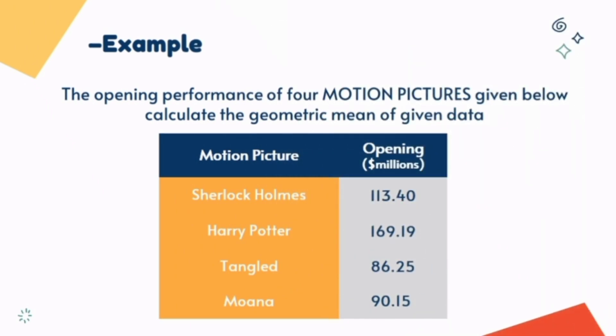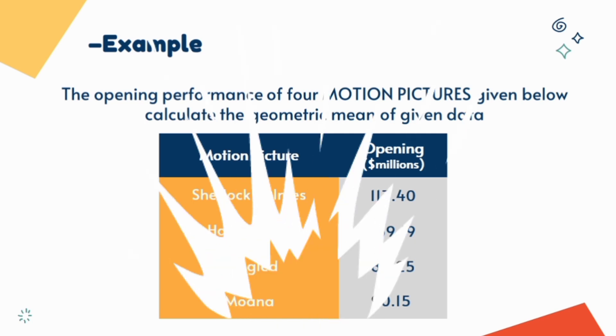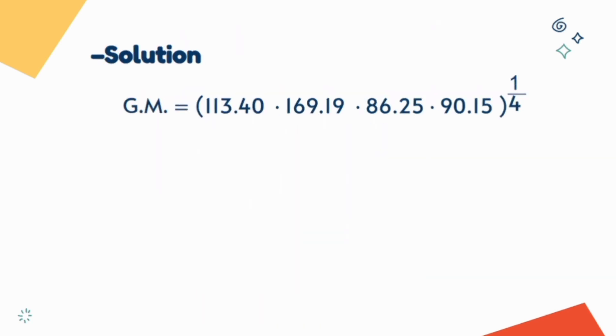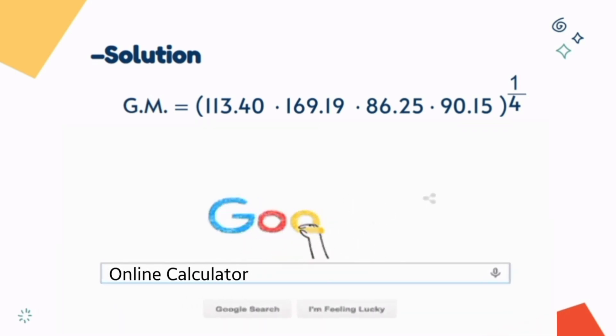For example, if we have data of opening day of four blockbuster movies and we have to calculate geometric mean, and as because there are four observations we can write this formula as... Only in calculation will be done in this way.